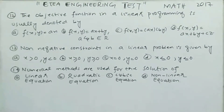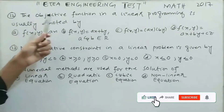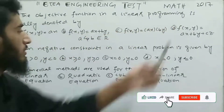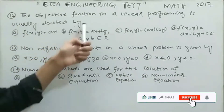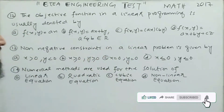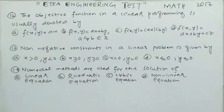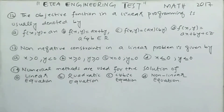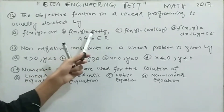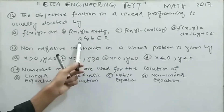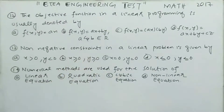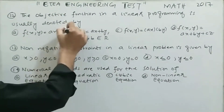Moving to MCQ number 12 — the objective function in linear programming. Remember, the objective function is the function used to maximize or minimize the variables in a linear inequality, and it is represented as f(x, y) = ax + by, where a and b belong to the real numbers. So the correct option for this MCQ is option number B.